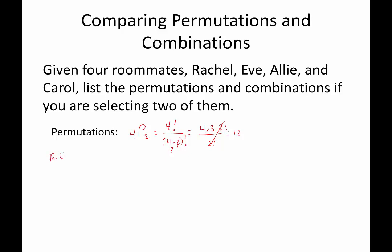So listing all 12 permutations: Rachel-Eve, Rachel-Allie, Rachel-Carol; then Eve first: Eve-Rachel, Eve-Allie, Eve-Carol; then Allie first: Allie-Rachel, Allie-Eve, Allie-Carol; then Carol first: Carol-Rachel, Carol-Eve, Carol-Allie. Here are the 12 different ways that we could permute two people from a group of four.